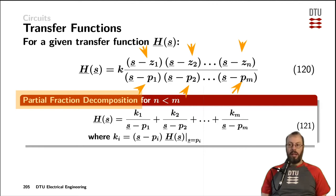We keep the poles in each of their fractions as denominators here, and then we are finding the coefficients for each of those fractions here called K1, K2, and Km.